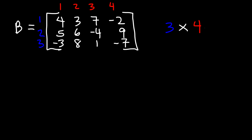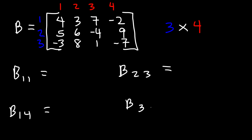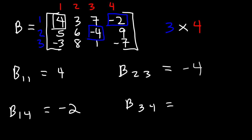The order of matrix B is 3 by 4. Now identify elements B₁₁, B₂₃, B₁₄, and B₃₄. Element B₁₁ is in the first row, first column, which has a value of 4. Element B₂₃ is in the second row, third column. Element B₁₄ is in the first row, fourth column, equal to negative 2. Element B₃₄ is in the third row, fourth column, so it has a value of negative 7.